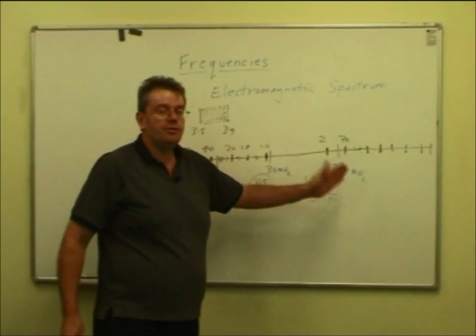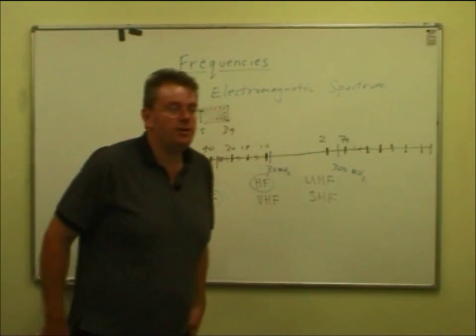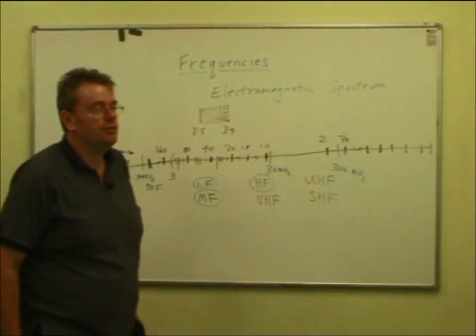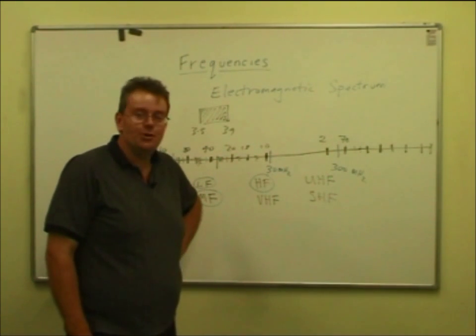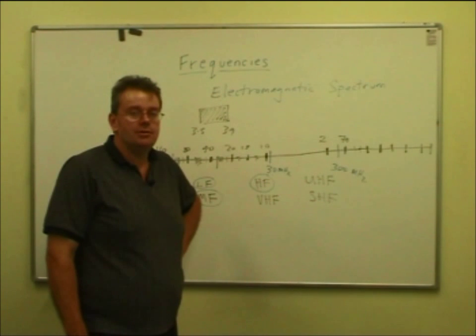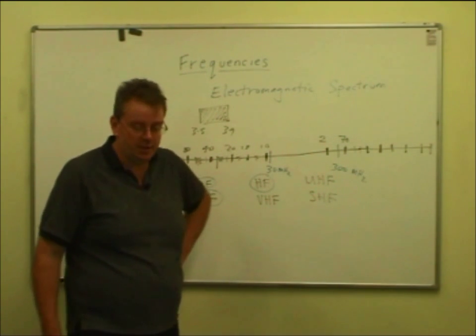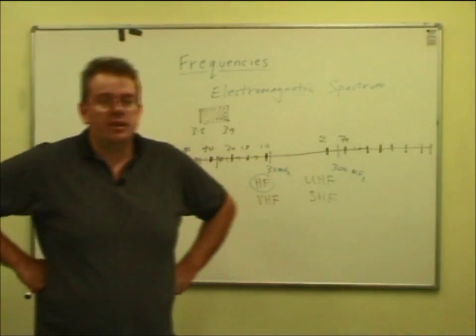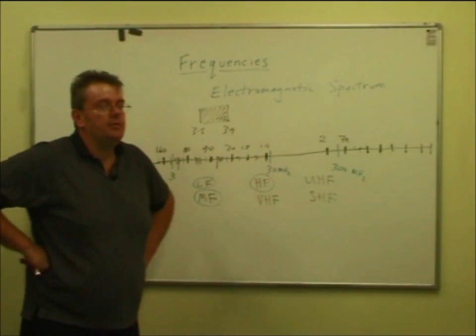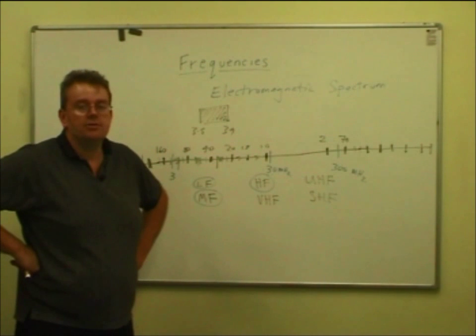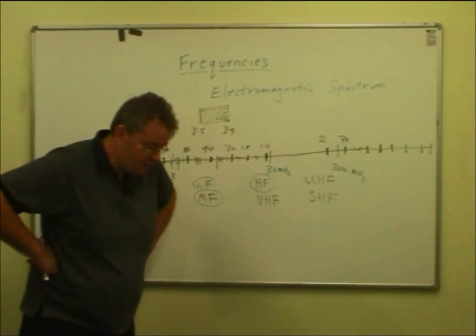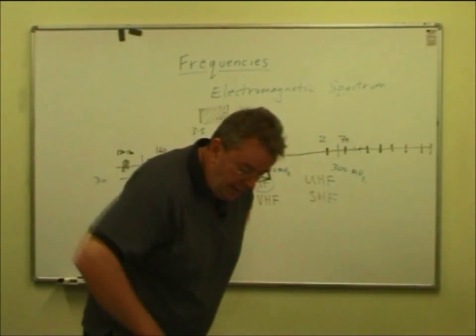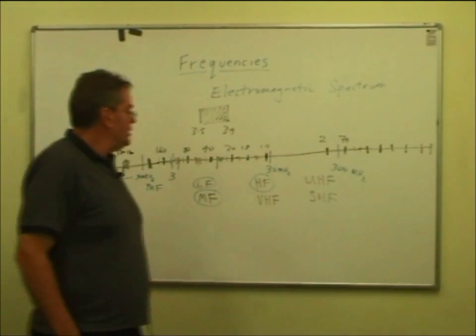UHF, 300 to 3,000 megahertz, or 3 gigahertz, and SHF, super high frequency. Yes, for super. Old terms. SHF is 3,000 to 30,000 megahertz, and that's where most of the point-to-point microwave links and satellite links are. Direct broadcast TV off satellites is in that SHF range in the 3 to 30 gigahertz range.